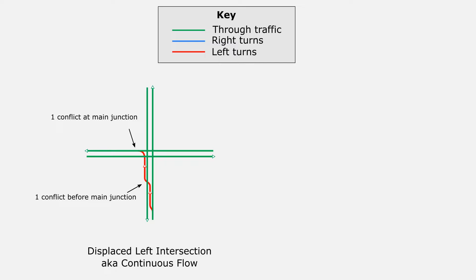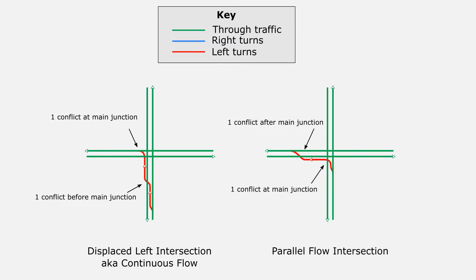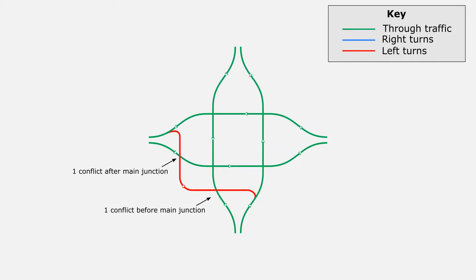For clarity I've only drawn in one of the left turns here, and only for one leg, but obviously the full intersection will have all the other turns as well. A less well known but very similar intersection is the parallel flow intersection, which has one conflict at the main junction first alongside the traffic signals and then moves the other conflict after the main junction instead of before it. Because I don't have traffic signals to use and synchronise with the turning conflicts, I'm going to have to borrow both these strategies and move the left turn conflicts to both before and after the main junction.